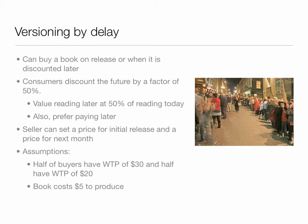Harry Potter queues. Imagine that consumers discount the future by a factor of 50%. That means they value reading later at 50% of reading today. Their surplus is reduced by 50% by delaying, but they make transactions based upon what they value at the time they get to purchase. The seller can set a price for its initial release and also a discounted price later on. There are two types of buyers: one with a willingness to pay of $30, and one with a willingness to pay of $20. The population is divided 50-50 between the two. Books cost $5 to produce.